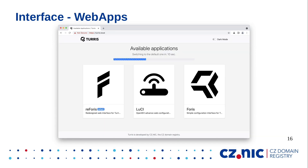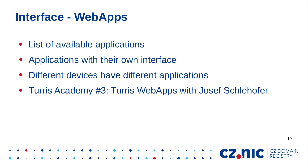The last interface — very interesting — is the web apps page. It is our list of available applications from which you can easily navigate wherever you want. It has a default app where users will be referred after a certain period of time, and other applications will appear after installation — for example, NetData, Transmission, etc. We have a Turis Academy session number three with my colleague Joseph where he went through it, so you can check it. Note that different devices have different applications in web apps — for example, Shield has only the Reforis administration interface.